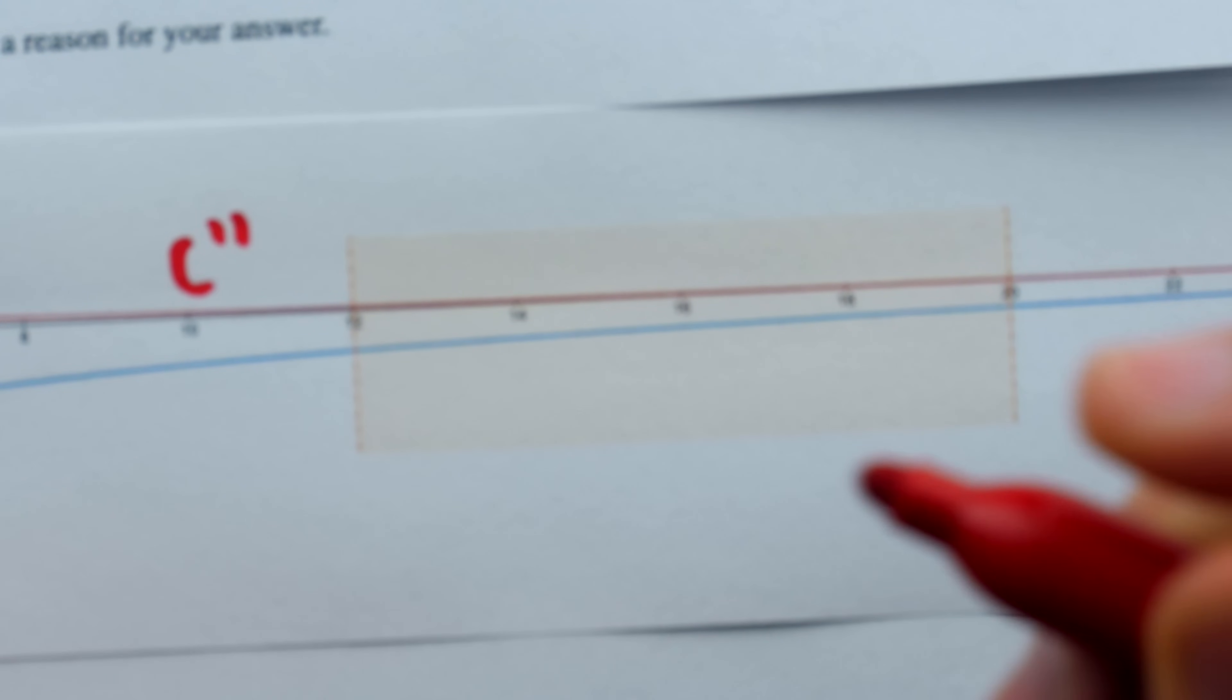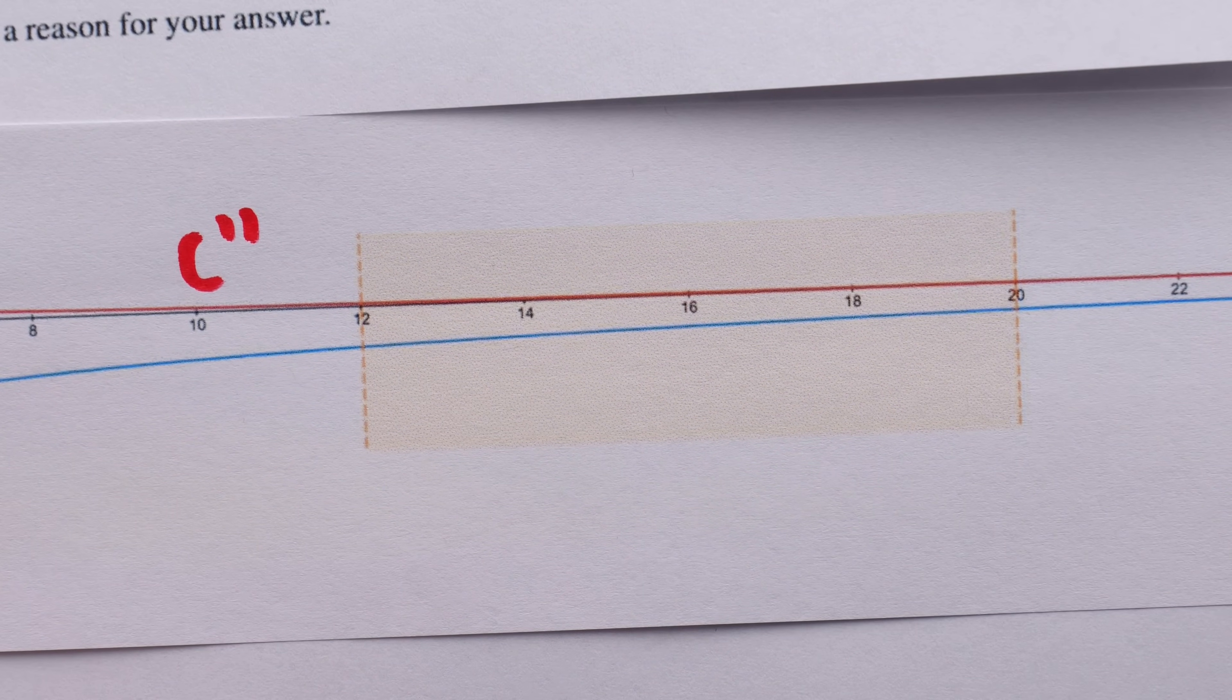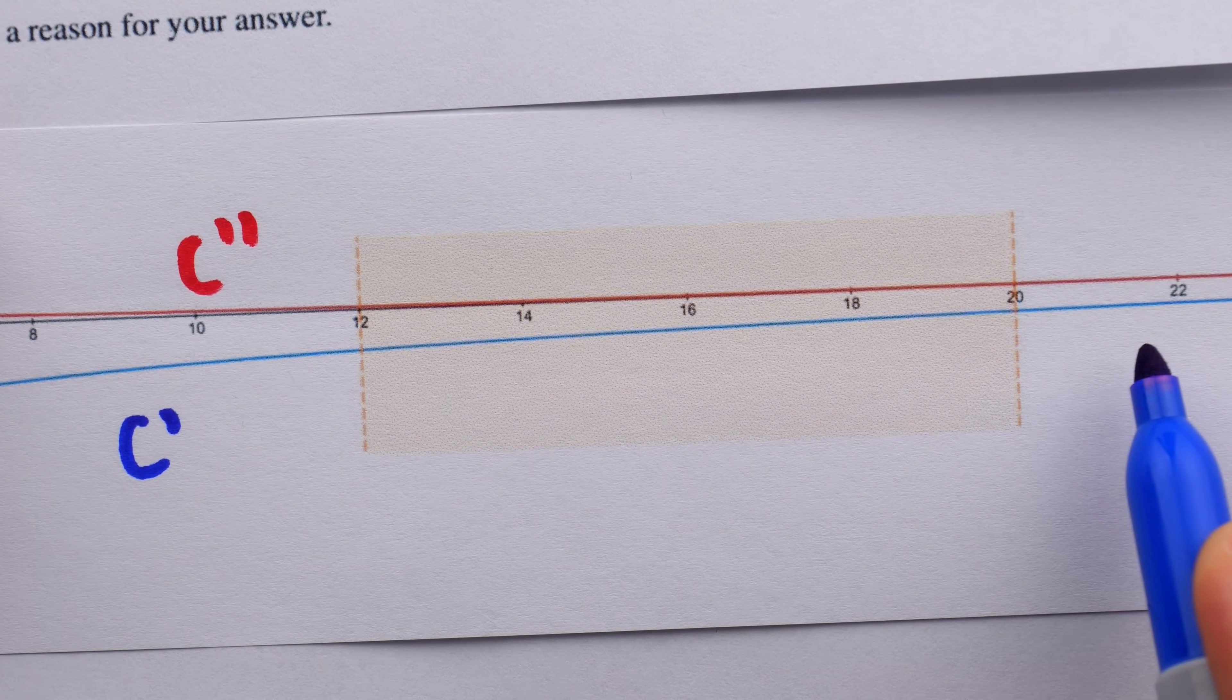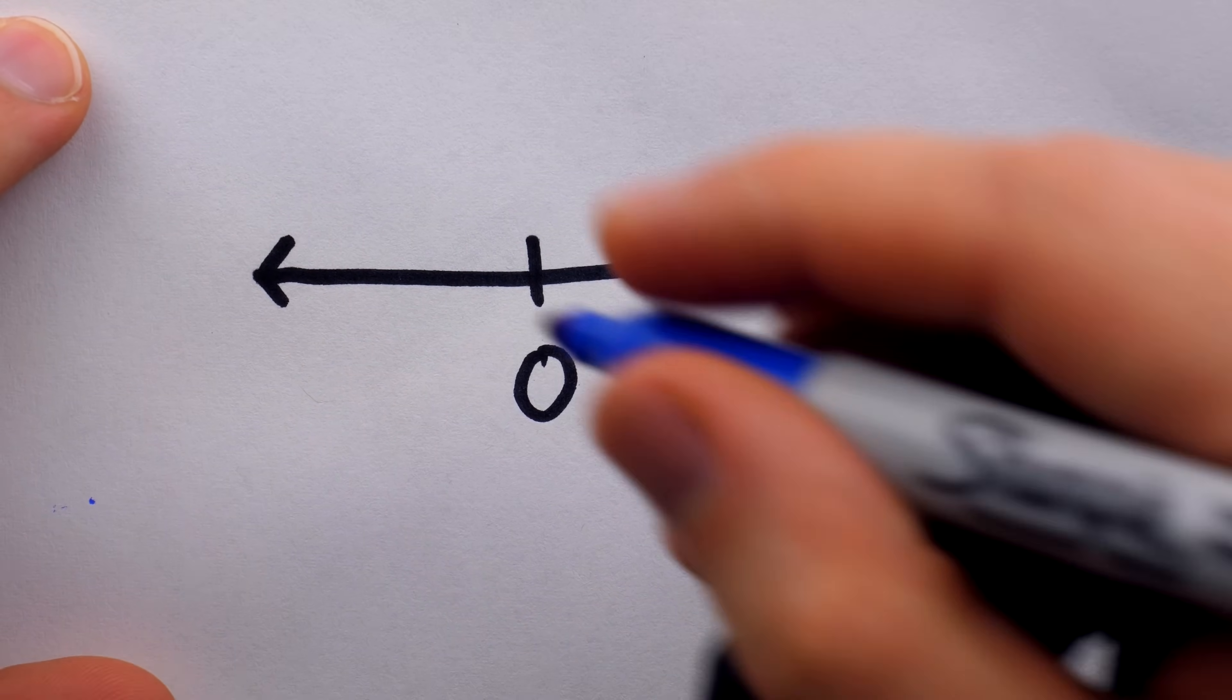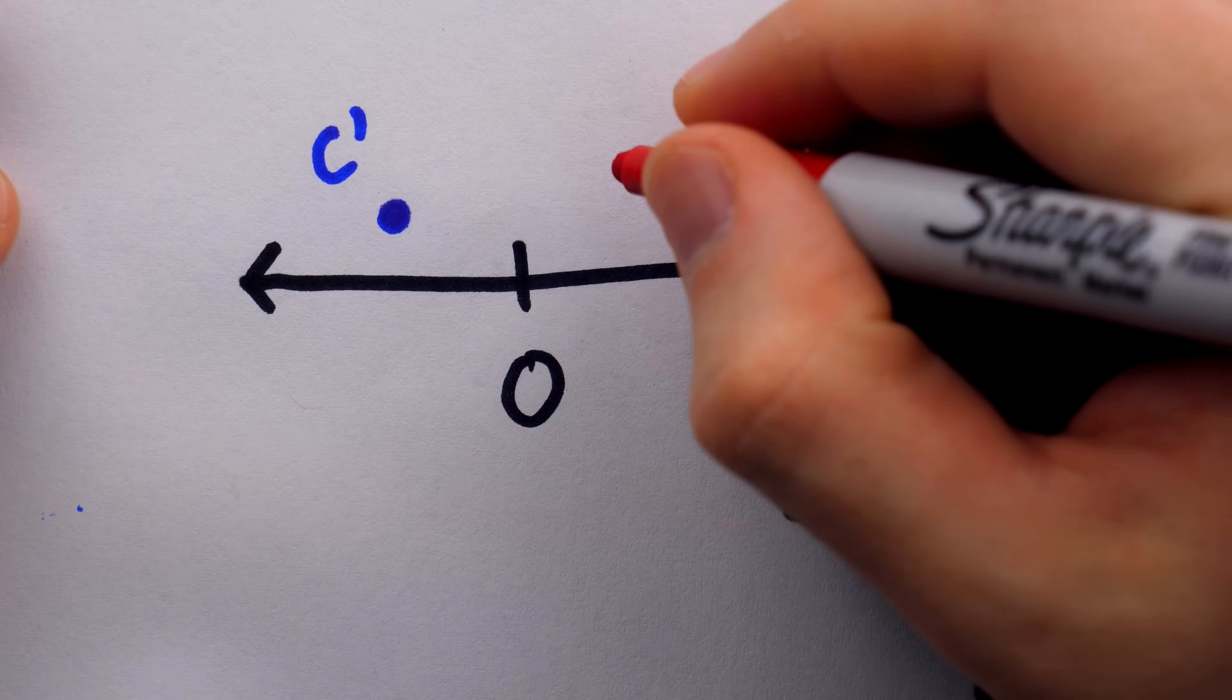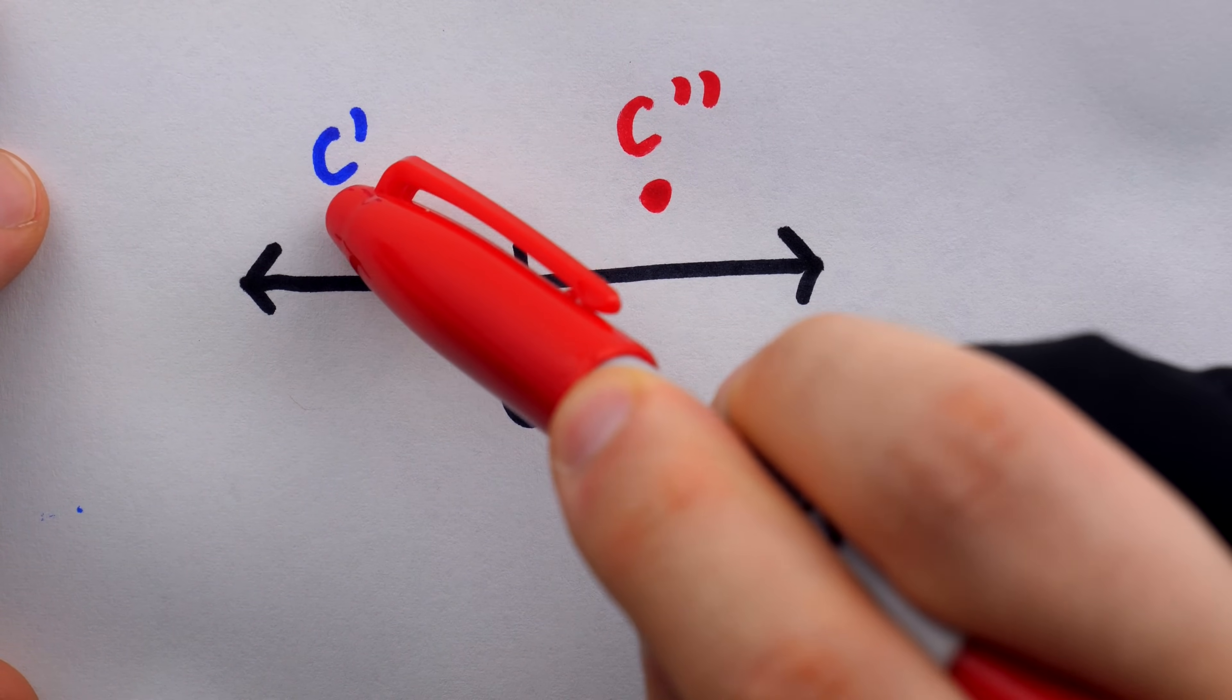The two things you should notice from this graph are that the second derivative, which again is in red, is positive. We see it here above zero. And the first derivative, which again is in blue, is negative. We see it here below zero. Oftentimes, sketching out a number line is helpful in interpreting these pieces of information. Here's a number line with zero on it. We know from the graph that over the interval of interest, the first derivative is negative, so it's somewhere over here to the left of zero. Meanwhile, the second derivative is somewhere over here. It's positive. It's to the right of zero.